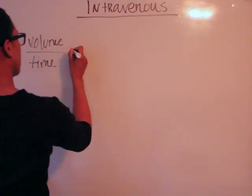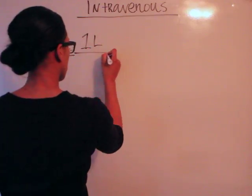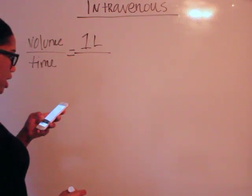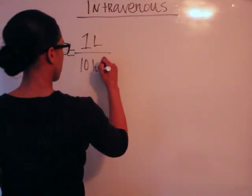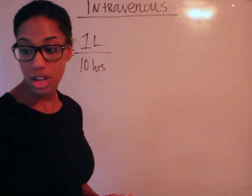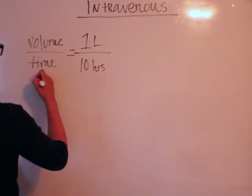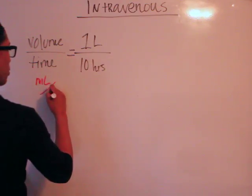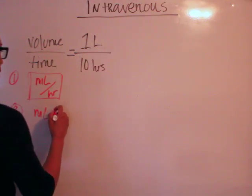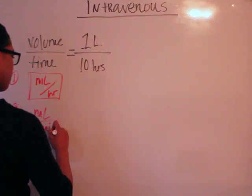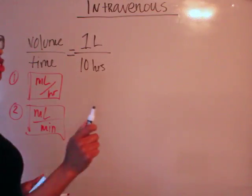Let's first work on the milliliter per hour. So given here we have one liter of the normal saline and it's administered over 10 hours. So first they want it, let's see, we always say write down what they want. The first one they want it in milliliters per hour, and the second one they want it in milliliters per minute.